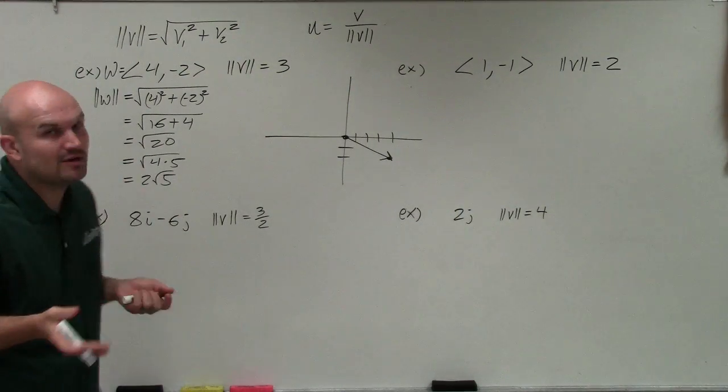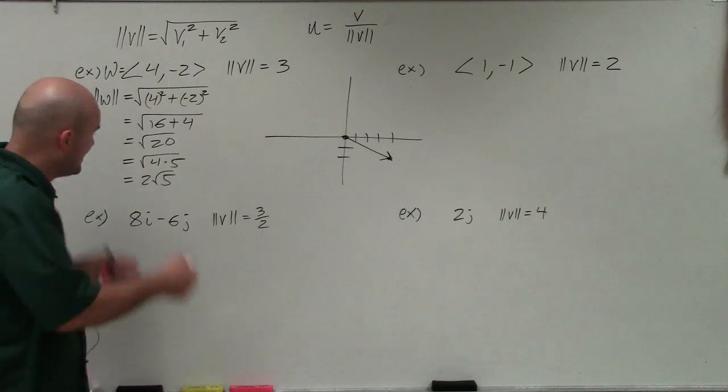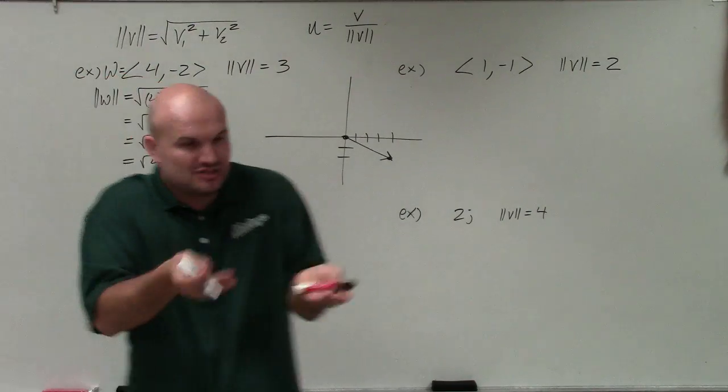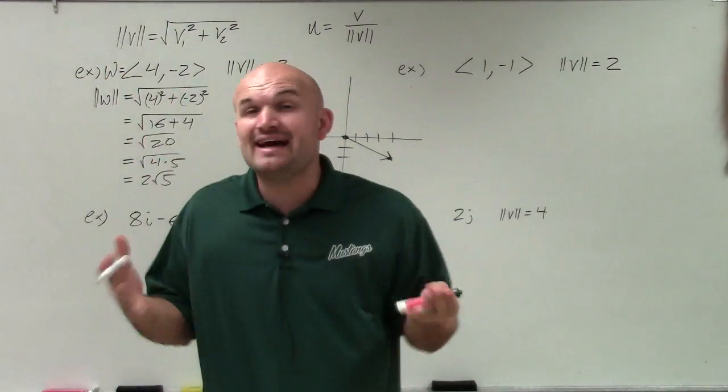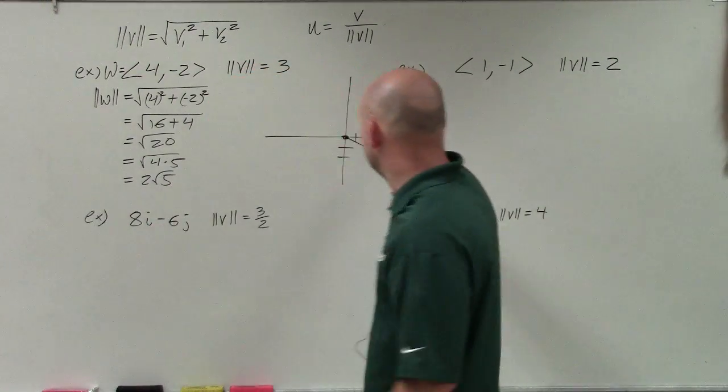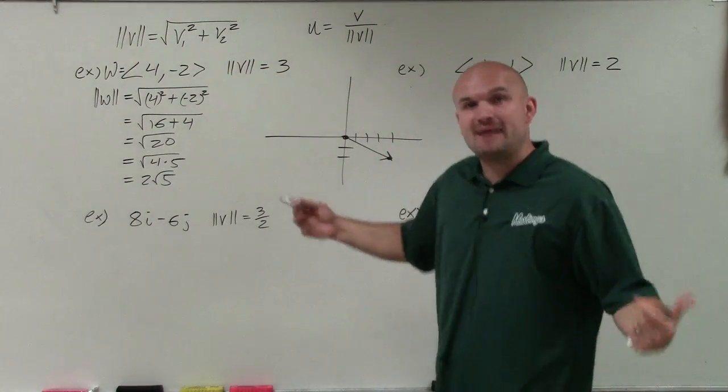Well, square root of 20 we know is not 3, right? So this vector does not have a magnitude of 3. The vector has a magnitude of 2 times the square root of 5, which is not 3. So I want to find the vector that has the same direction as this vector, but has a magnitude of 3.